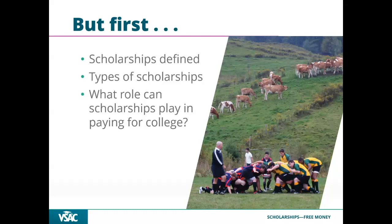Scholarships can be one-time or renewable over two or four years. They come from many sources — the Rotary Club, the college itself, or automatically through your admissions application. For example, you might receive a letter saying you're accepted and also awarded a Dean's Scholarship of five thousand dollars a year over four years.